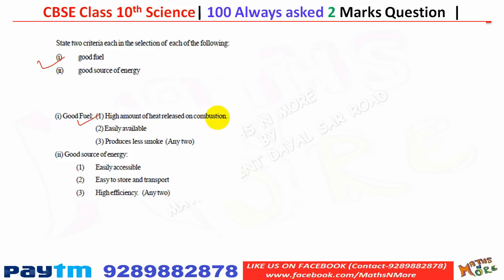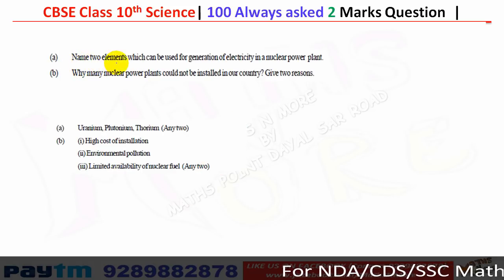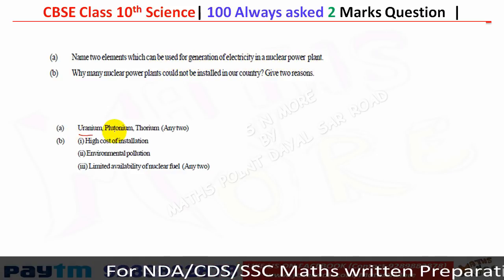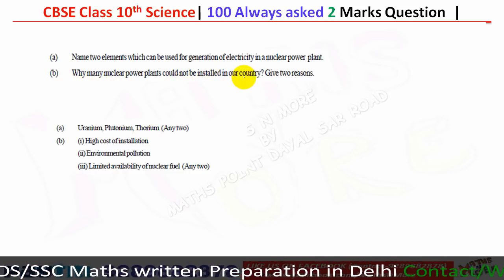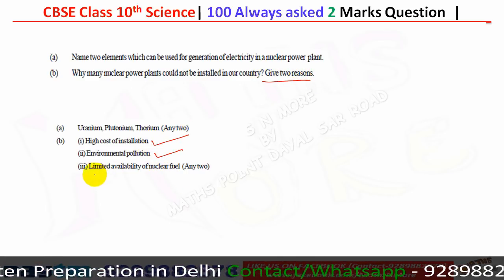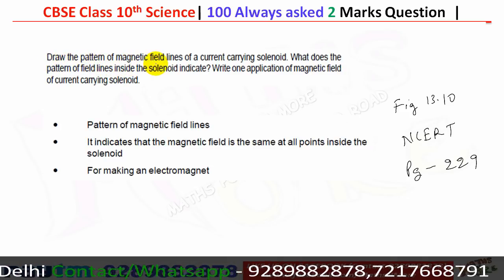Criteria for a good fuel: high amount of heat released on combustion, easily available, and produces less smoke — write any two. Criteria for a good source of energy: easily accessible, easy to store and transport, and high efficiency. Elements used for nuclear power generation include uranium, plutonium, and thorium. Nuclear power plants face challenges: high cost of installation, environmental pollution, and limited availability of nuclear fuel.